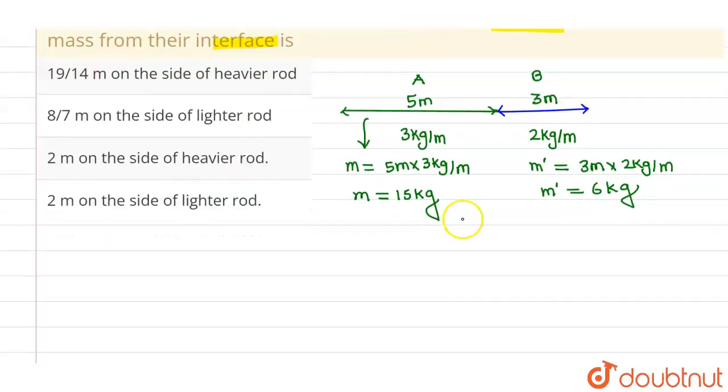So I can assume that this total mass 15kg is accumulated at the center of mass of this particular rod. Let's say this is point A where the total mass is 15kg. And I can assume that this total mass is accumulated at the center of mass of rod B, which is nothing but 6kg.